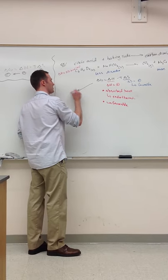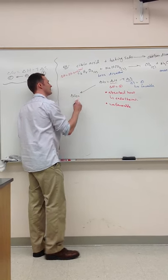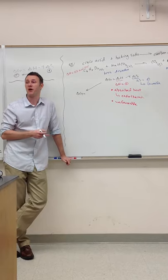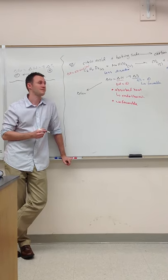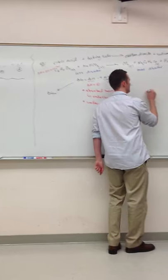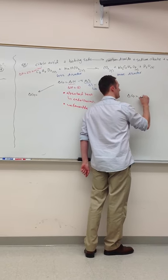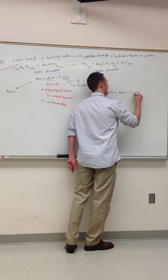But, using our observations, what do we know that delta G must be? Negative. Is it negative or positive? Positive. Two positives make a positive. Well, let's look at the equation. Delta G equals delta H minus T delta S.